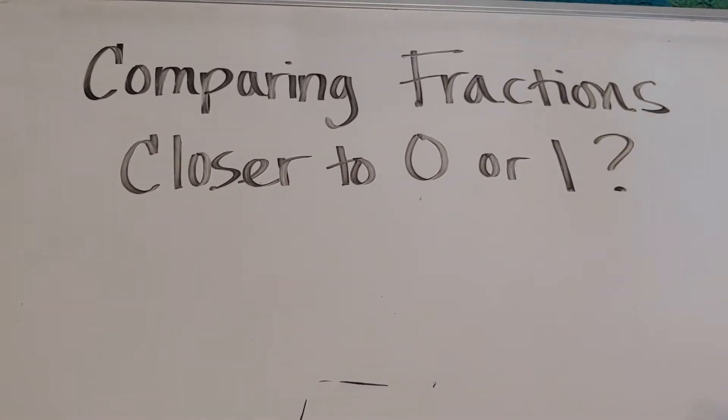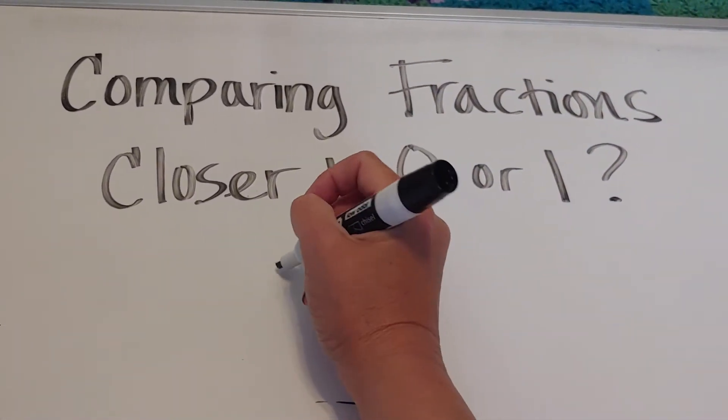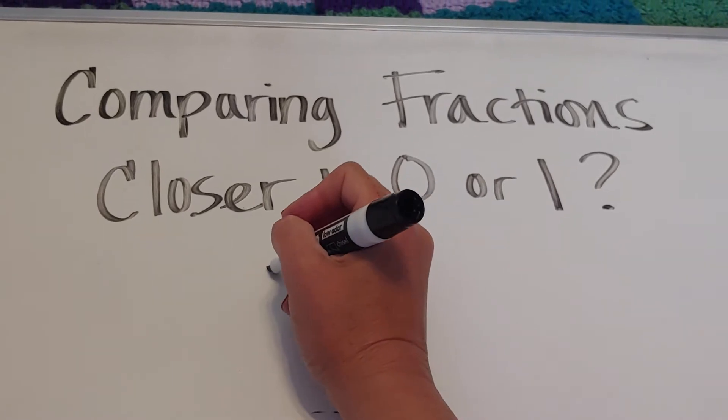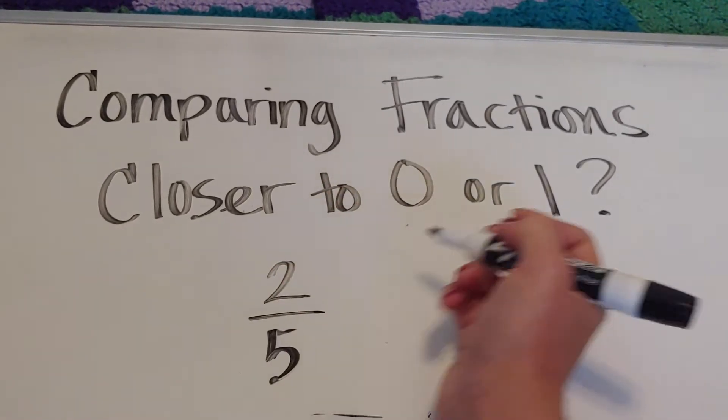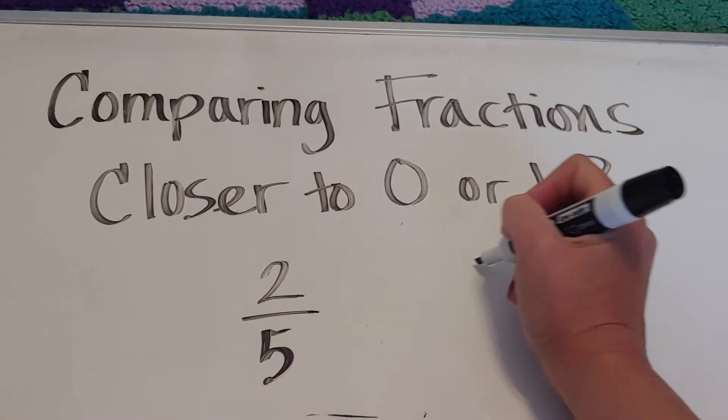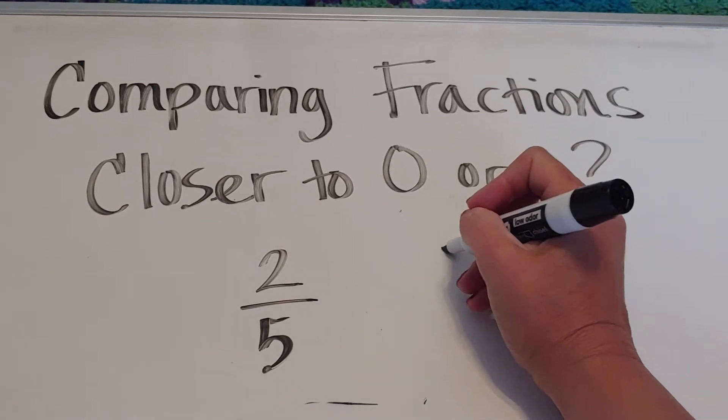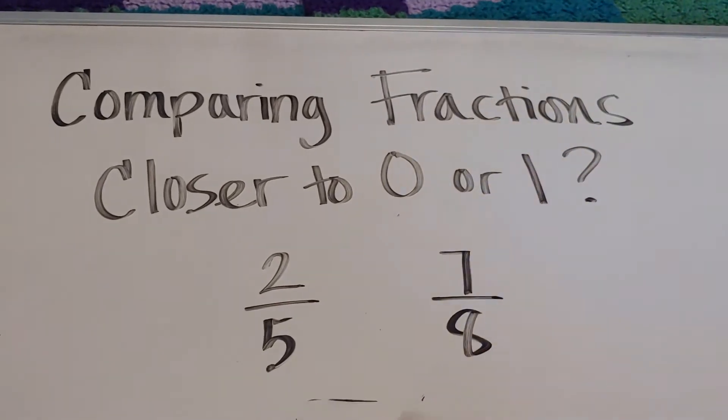The idea is that if we have two fractions with different denominators—let's say two fifths and seven eighths—which one is bigger?